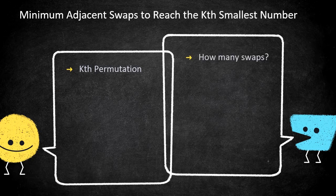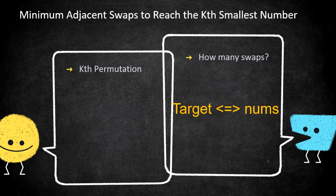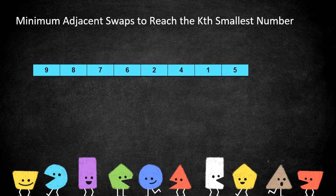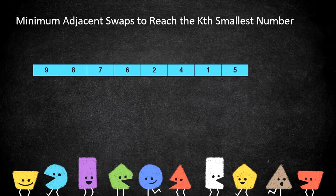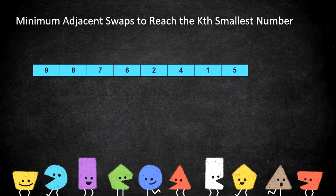The second half is finding the number of swaps needed to match the given number to the target. Since I've explained next permutation in detail in a previous video, I'll give an overview of the idea and focus more on the second half — counting how many swaps are needed.